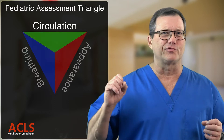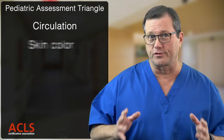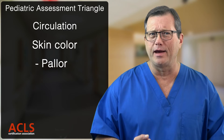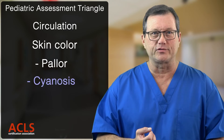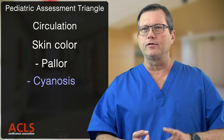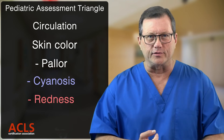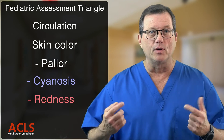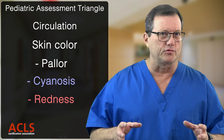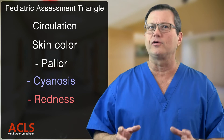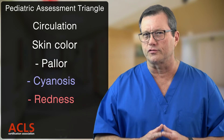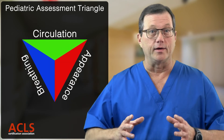Next up is Circulation — how do we assess circulation from across the room? We're looking at skin color. Is there pallor? Is this a pale or hypoxic-appearing kid? Is there cyanosis? We may also look for redness or periorbital edema, which can indicate an allergic reaction and lead to distributive shock — definitely a circulatory issue. So we want to assess this kid's color from across the room.